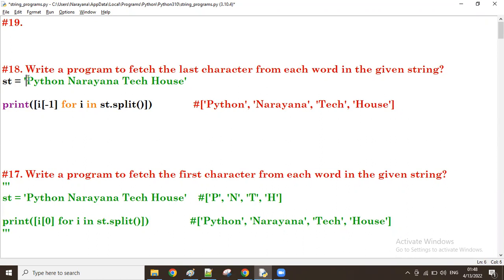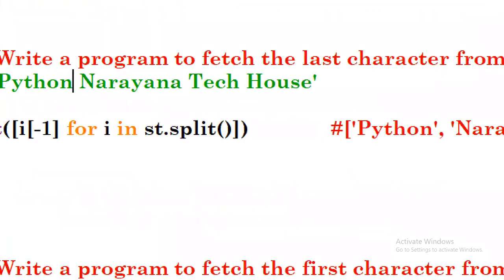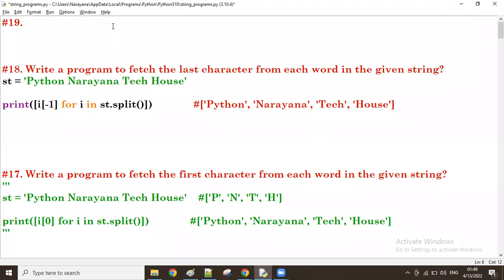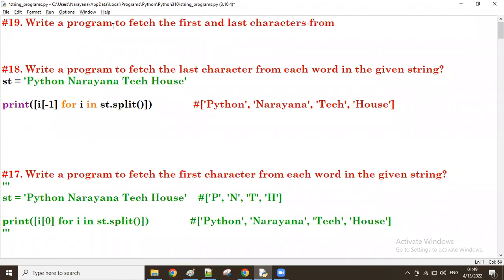In the first word, what are the first and last characters? For example, I want to get P and N as the first and last characters. Then N and A, then T and H, and H and E — the first and last characters from each word in the given string.